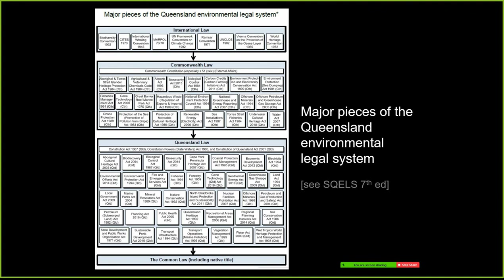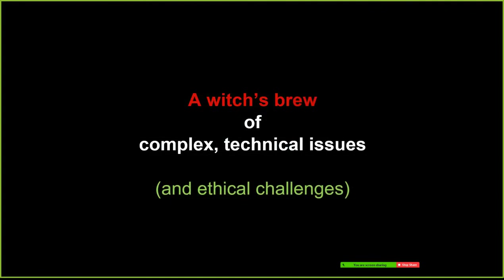If you think of the regulatory system like a jigsaw where you've got to identify the relevant bits to solve and build up the picture, that's a really powerful metaphor to use going forward. This whole system is a witch's brew of complex technical issues. For example, a local government reviewing its planning scheme might be concerned about bushfire management and how bushfires are changing because of climate change — that makes for a very complex and difficult technical question about how the local government should control development to deal with issues like bushfires and climate change.